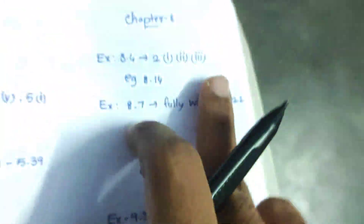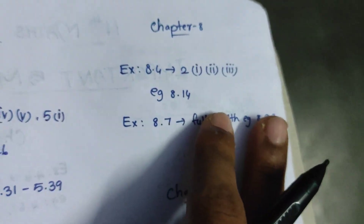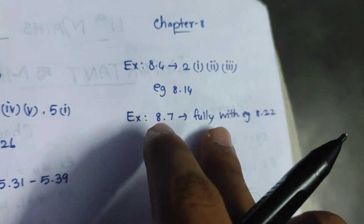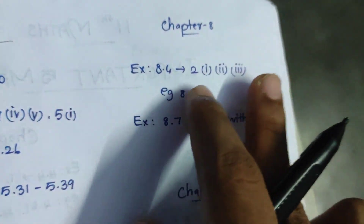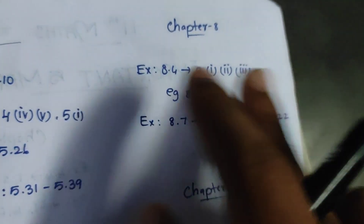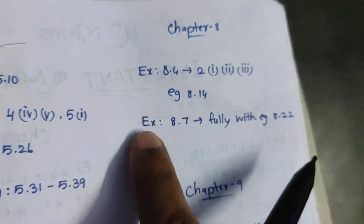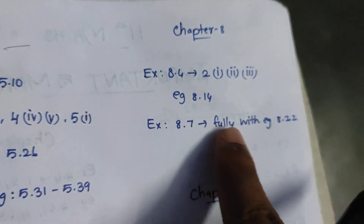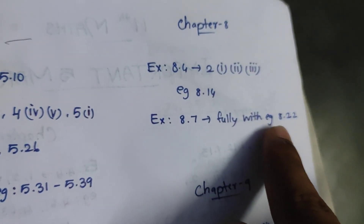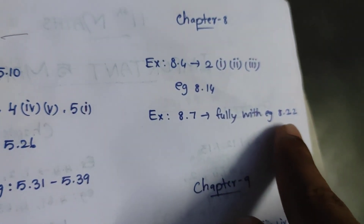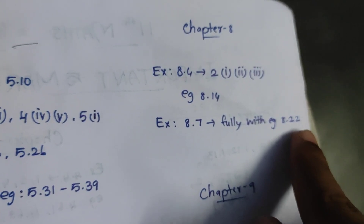The next chapter is 8.4 — 2nd, 1st, 2nd, 3rd. Example 8.14 and 8.7, fully with Example 8.22.